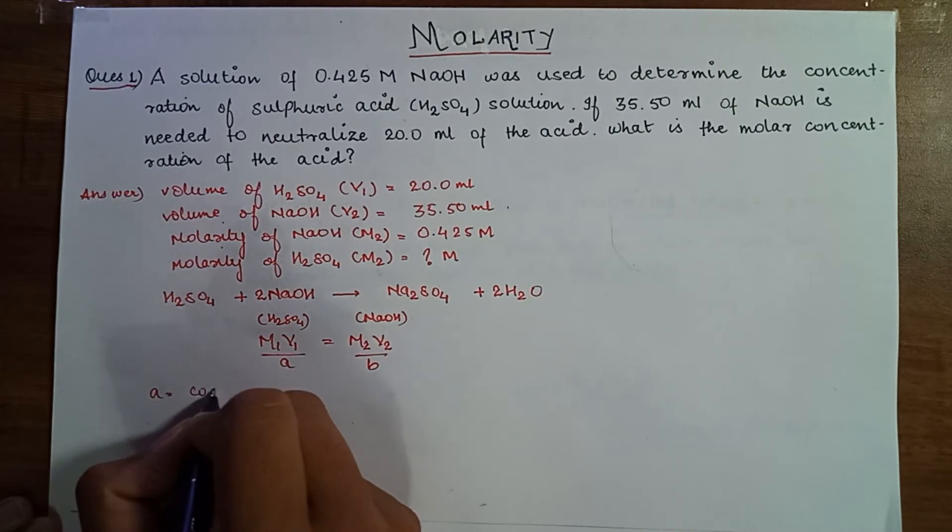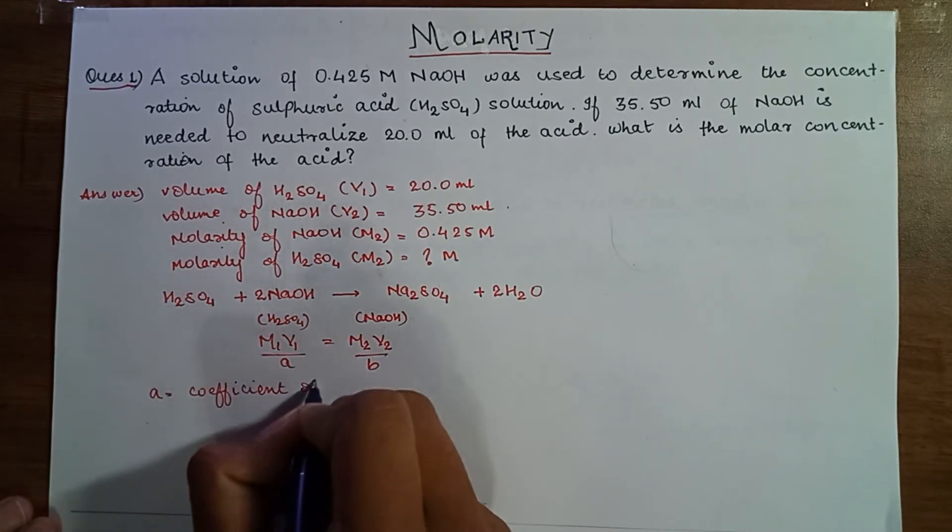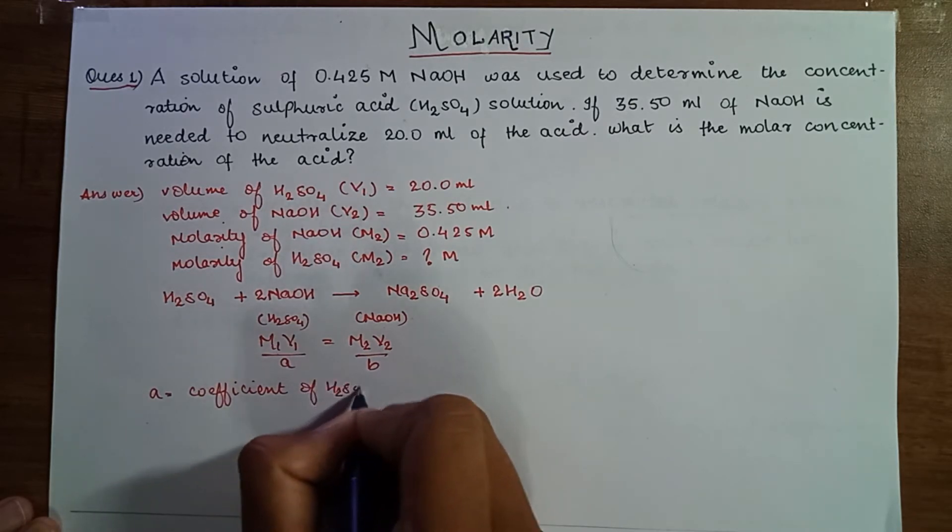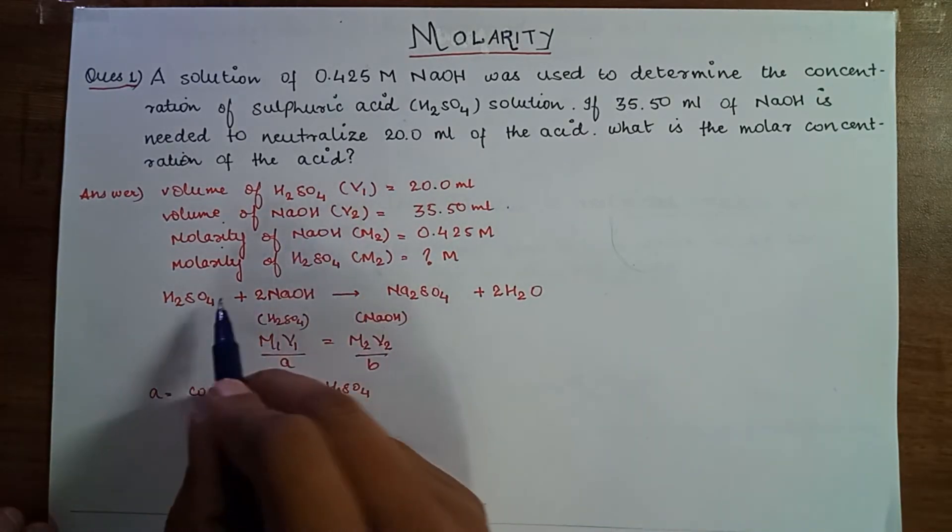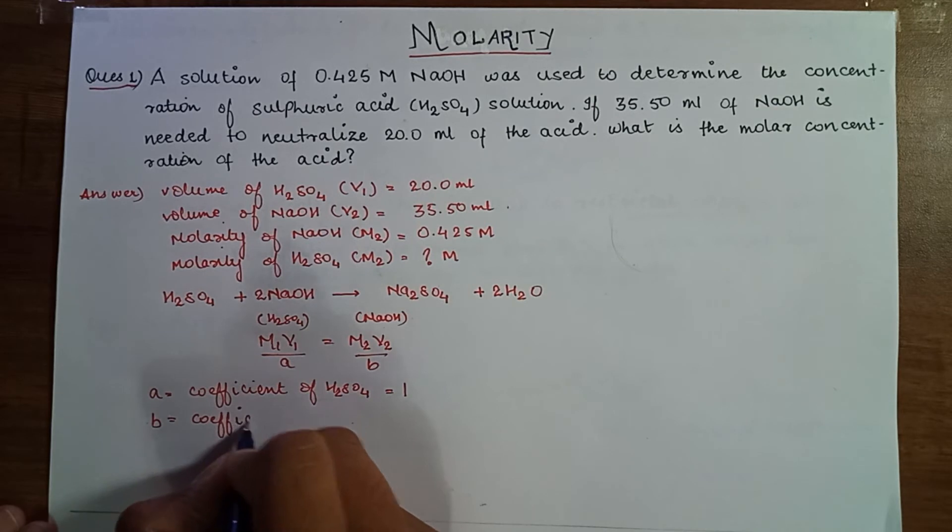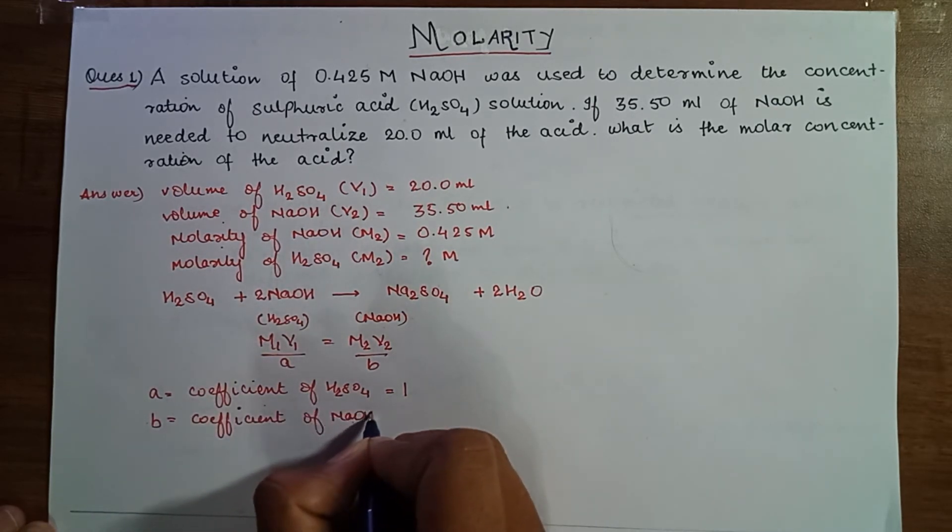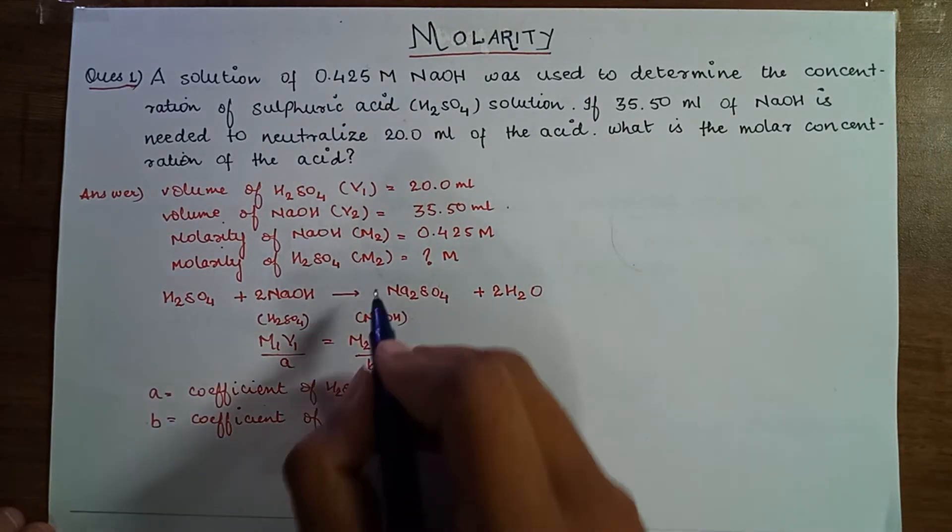A is equal to coefficient of H2SO4 in balanced equation, which will be 1. B is equal to coefficient of NaOH in balanced equation, which is equal to 2.